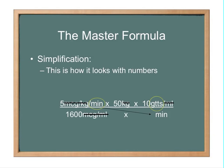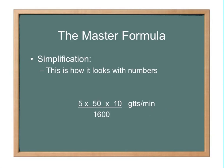And if I'm confusing you, when I say drops, I'm talking about this GTTS. That is the abbreviation for drops. So then you would be left with just the numbers, 5 times 50 times 10 over 1600. You would work out that math and whatever your solution would be, that's how many drops per minute you would be administering.